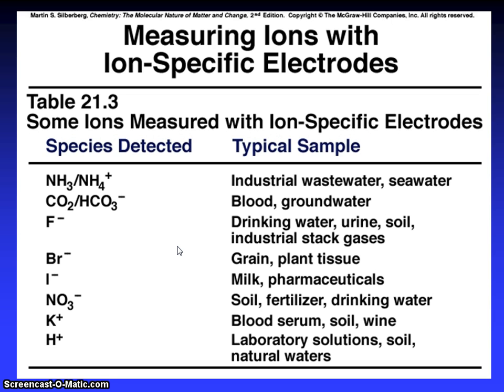Now, measuring ions with ion-specific electrodes. Some ions measured with ion-specific electrodes: species detected, typical sample. NH3, NH4 plus - species in industrial waste water, seawater. Carbon dioxide and carbonate in blood. F- in ground water, drinking water, urine. Soil, industrial effluent. Bromide minus in grains, plant tissue. I minus in milk, pharmaceuticals. Nitrate in soil, fertilizers, drinking water. Potassium K plus in blood serum, soil, wine. NH4 plus in laboratory solutions, soil, natural water.